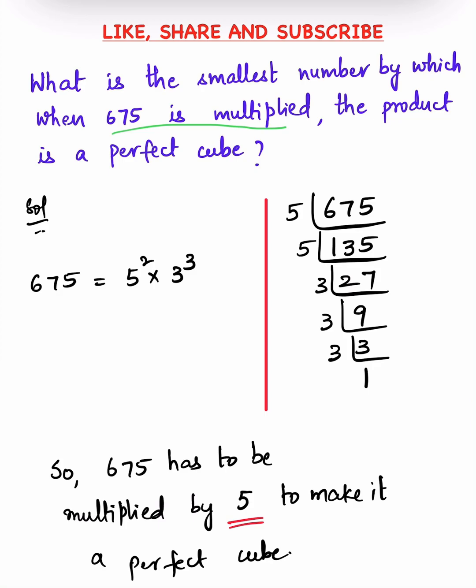First let us prime factorize 675, which is equal to 5² × 3³.